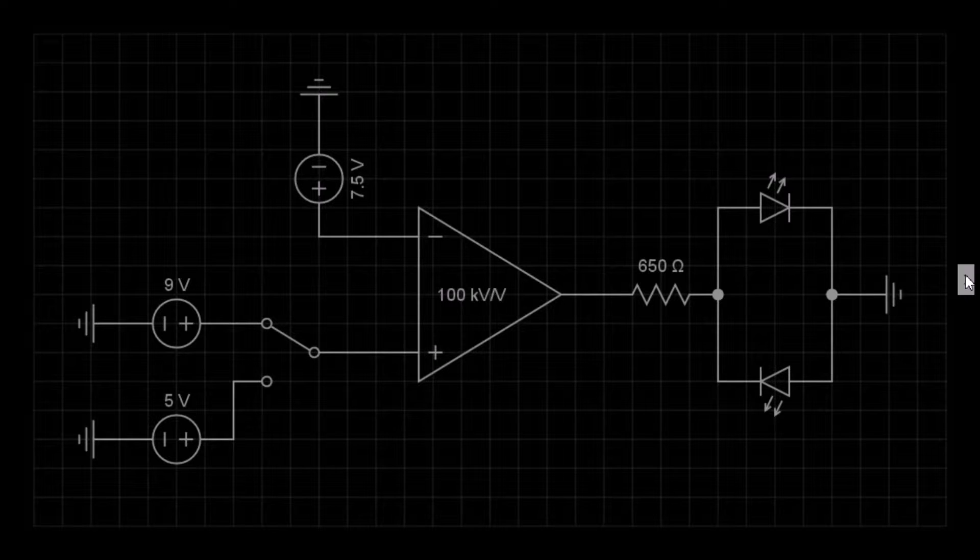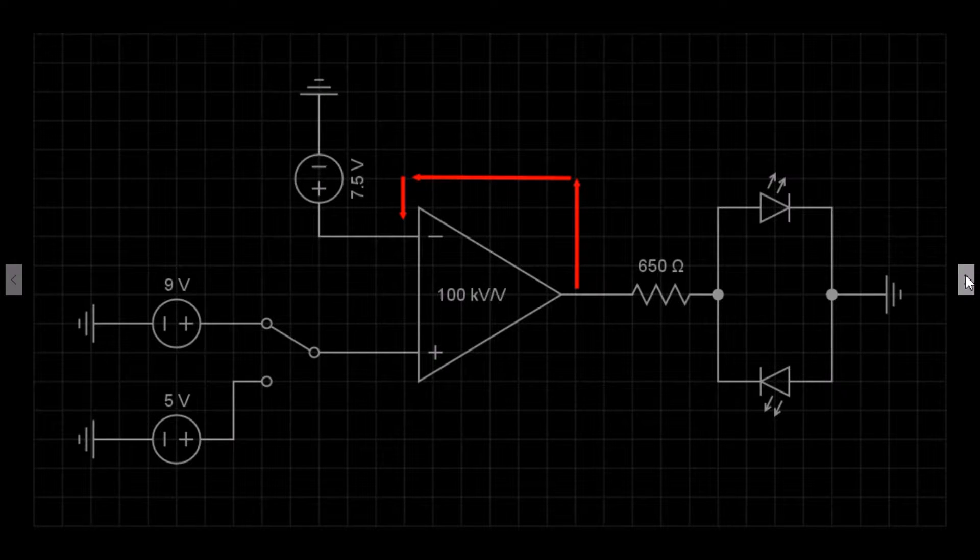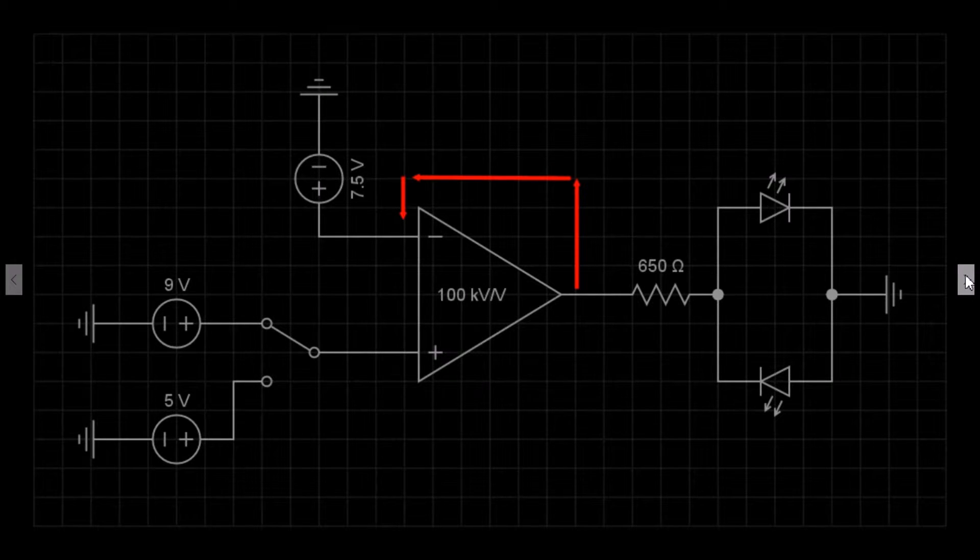So what we have in the circuit is the op-amp on the centre, but notice there is no feedback loop. The op-amp is in what is known as open loop configuration.